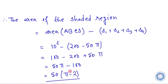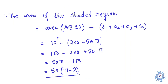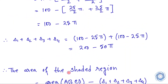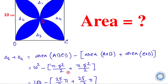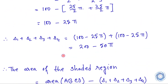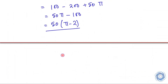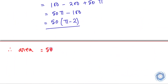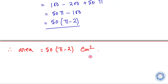Finally we get that the area of the shaded region is 50 times (pi minus 2). We are supposed to find the area of this shaded region, and the area is 50(π − 2) cm². So we are done.